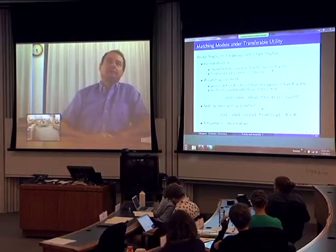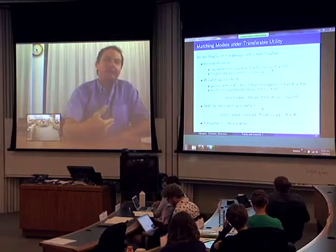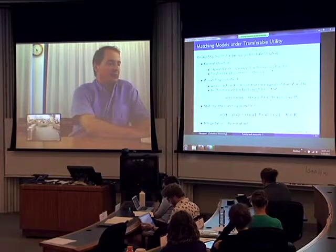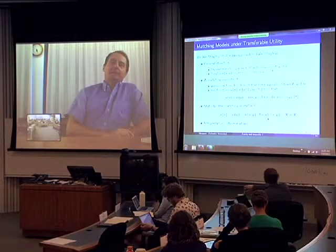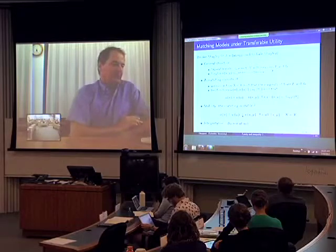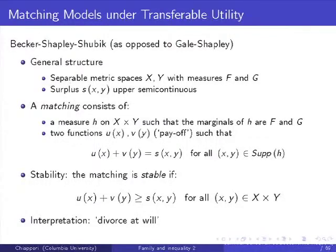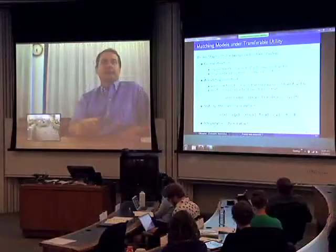What is stability? A matching is stable if it cannot be the case that two people not currently married together would both like to be married together. This is equivalent to the condition U(x) + V(y) ≥ S(x,y) for all x,y. If this inequality were reversed — if S(x,y) > U(x) + V(y) — it would mean the cake they'd generate together exceeds the sum of their current shares, so they should marry and both would be better off, violating stability.